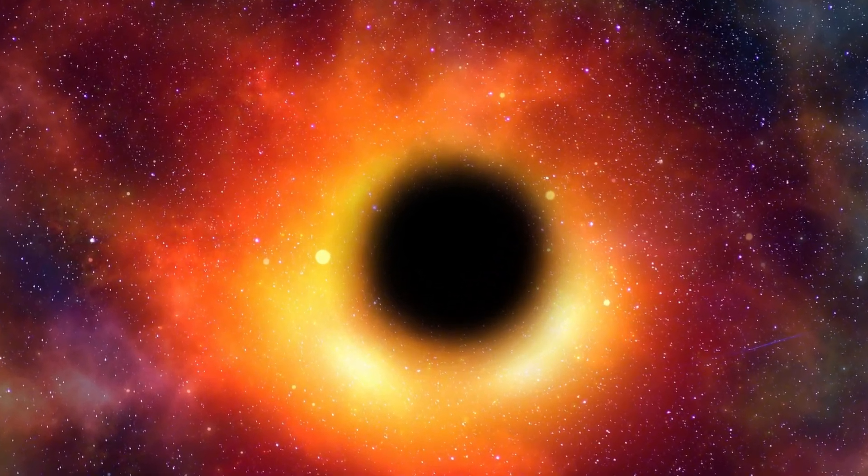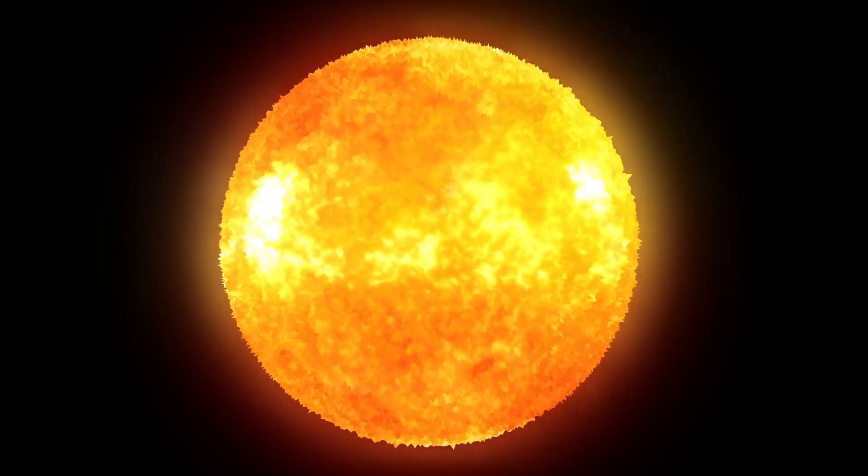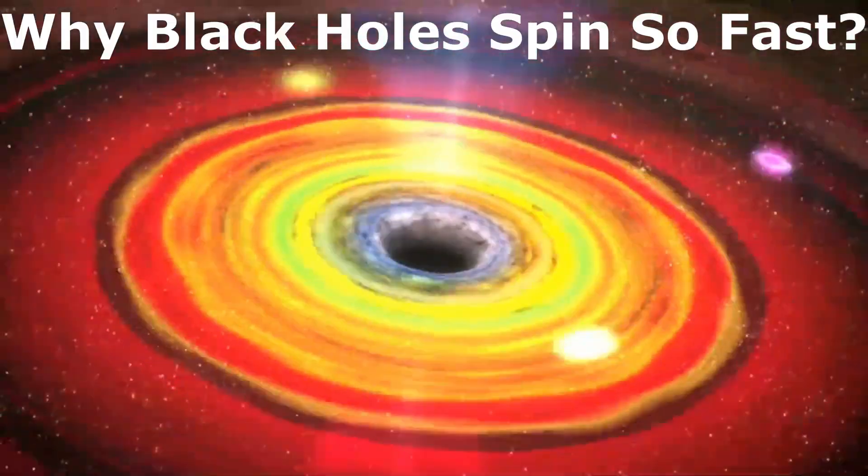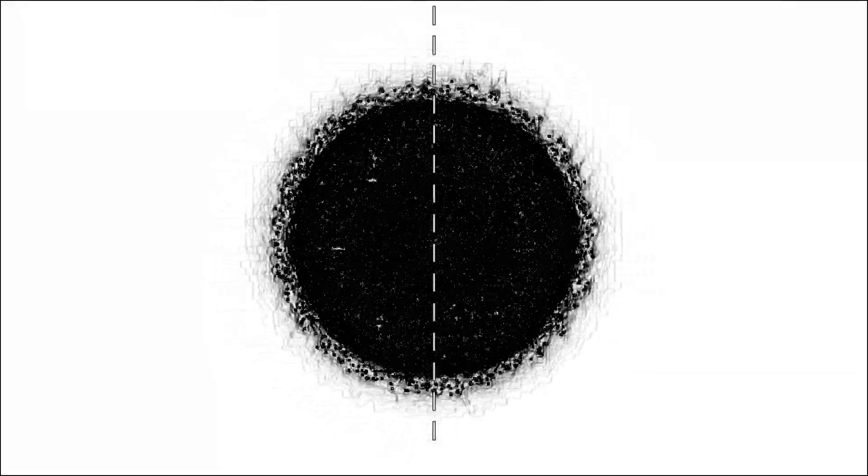And we know that the black holes are formed from the dying stars. So, these black holes get their spin from the spinning star. But why black holes spin so fast after all? When the black hole starts to collapse under its own gravitational pull, its whole mass comes closer to the axis of rotation.